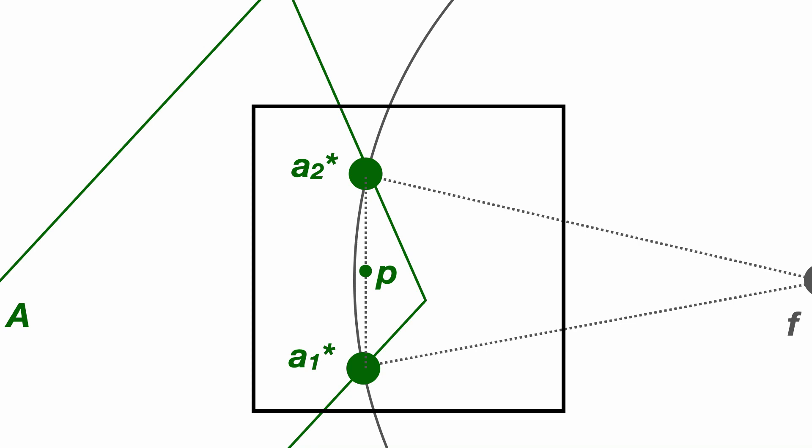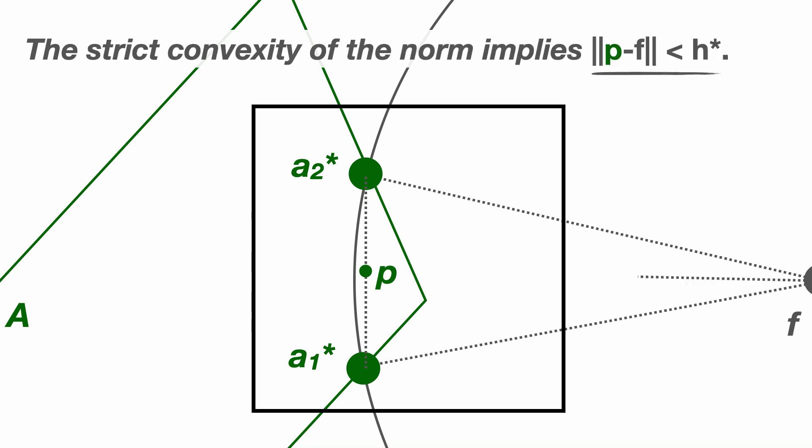Since P is on a line connecting A1 star and A2 star, then also by the strict convexity of the norm, it must also be less than H star away from F and so A1 star and A2 star are no longer the best approximations. This contradiction proves the theorem.